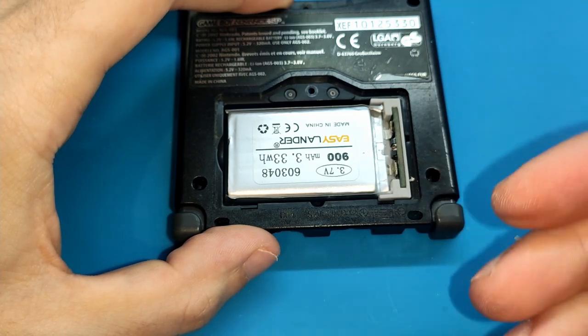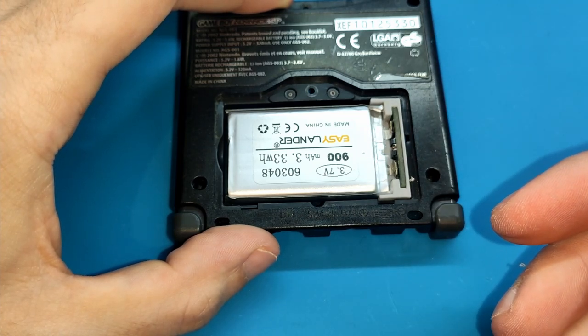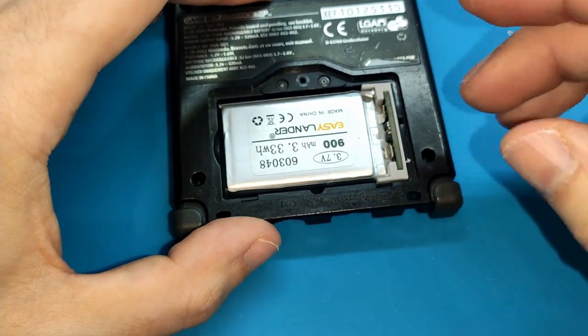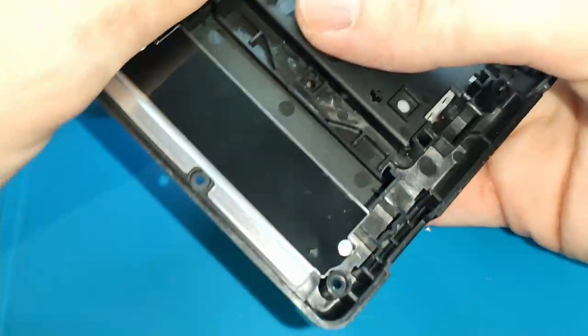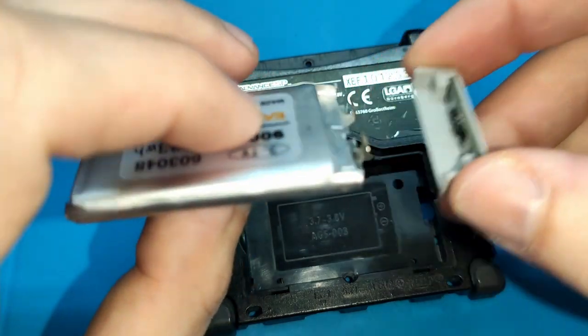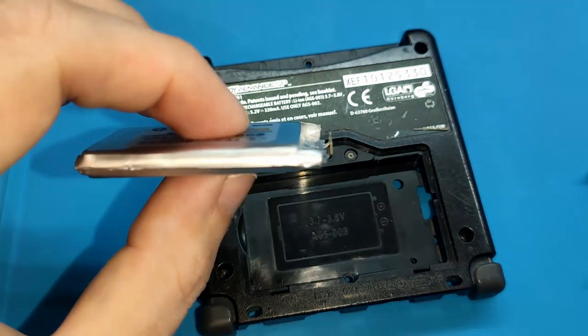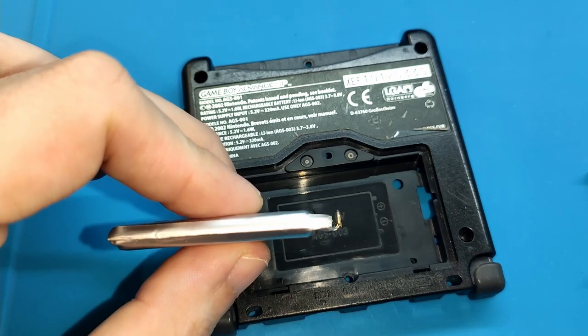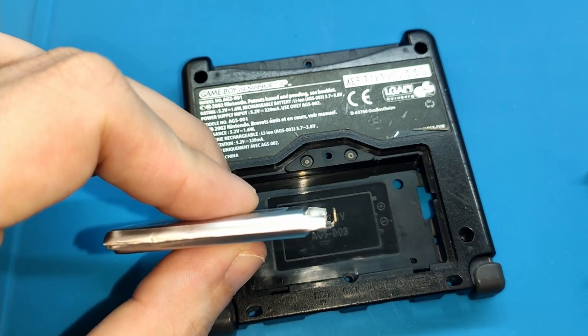Now this is the step. The next thing that we need to do is solder. But I want to remove the battery only one second to show you how the legs of the battery look like. This is the thing that we need. So we can put it back.